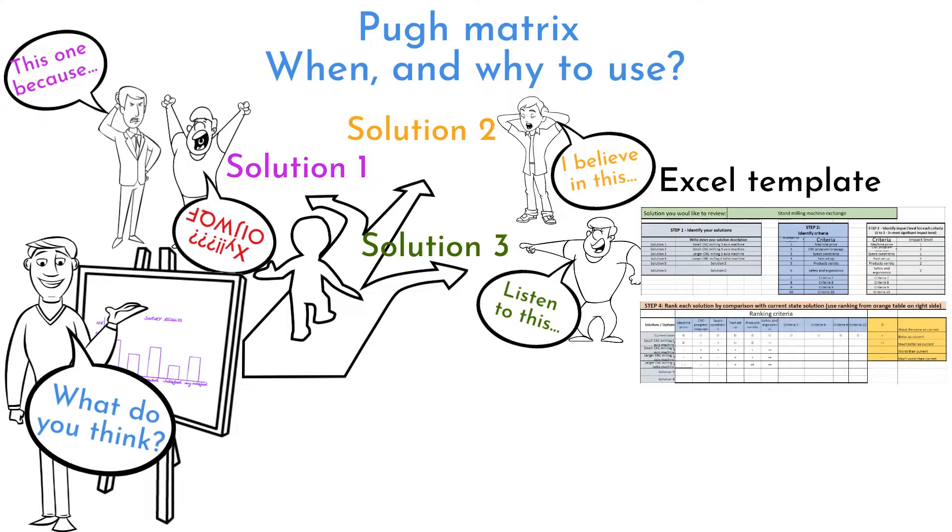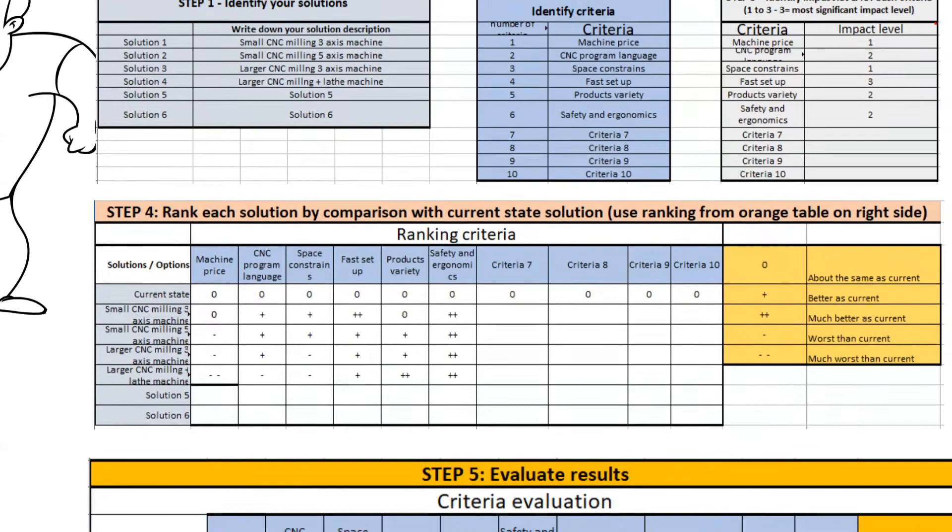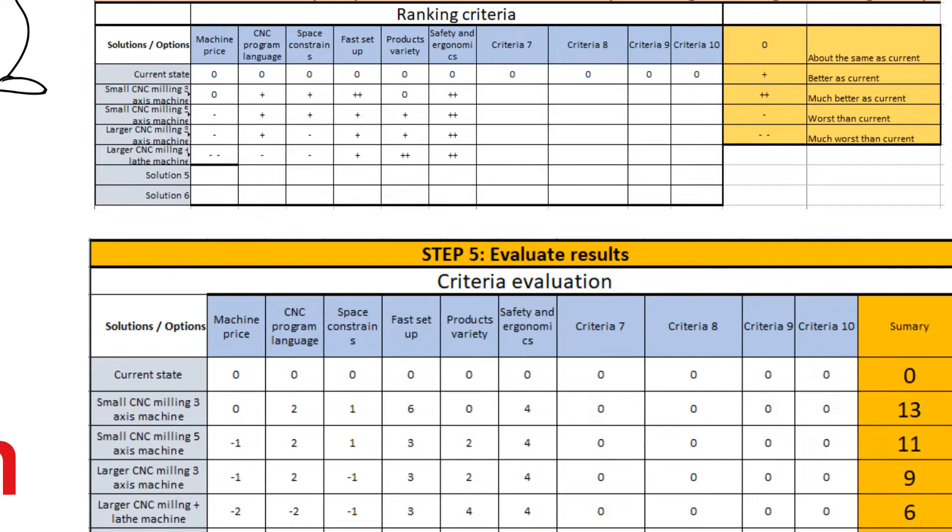This Pugh Matrix Excel template is available on my blog sixsigmamania.com for free. Excel template will automatically calculate results after inserting ranking for each solution criteria, so you do not need to calculate anything, only evaluate solutions. There are other Lean Six Sigma free templates for your usage too.